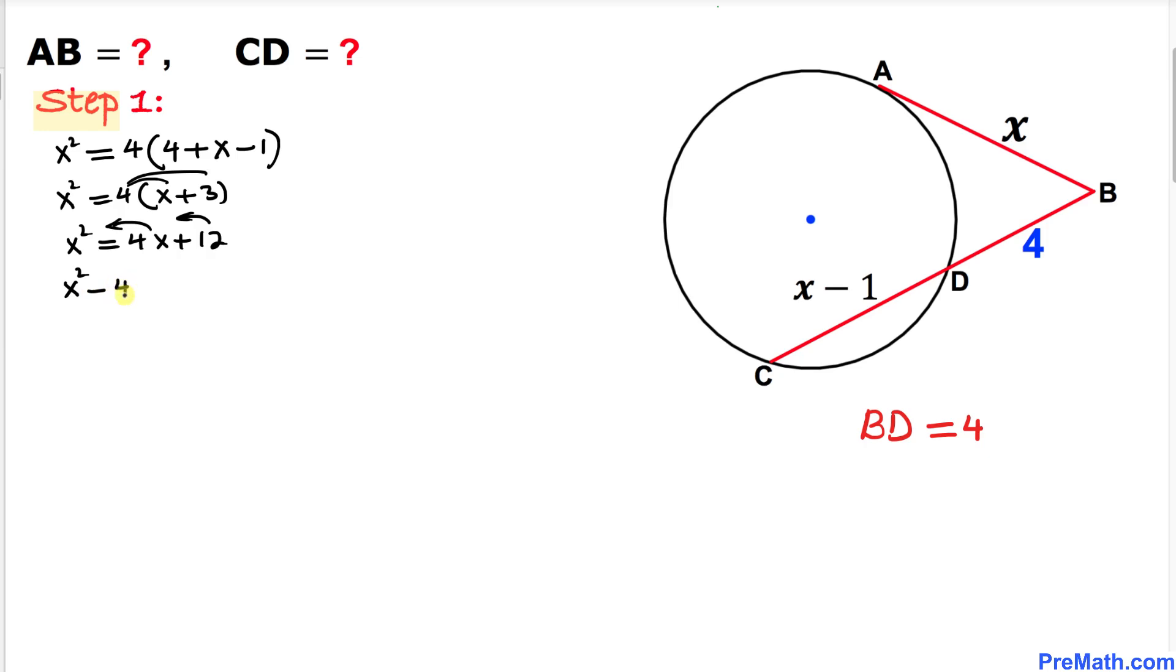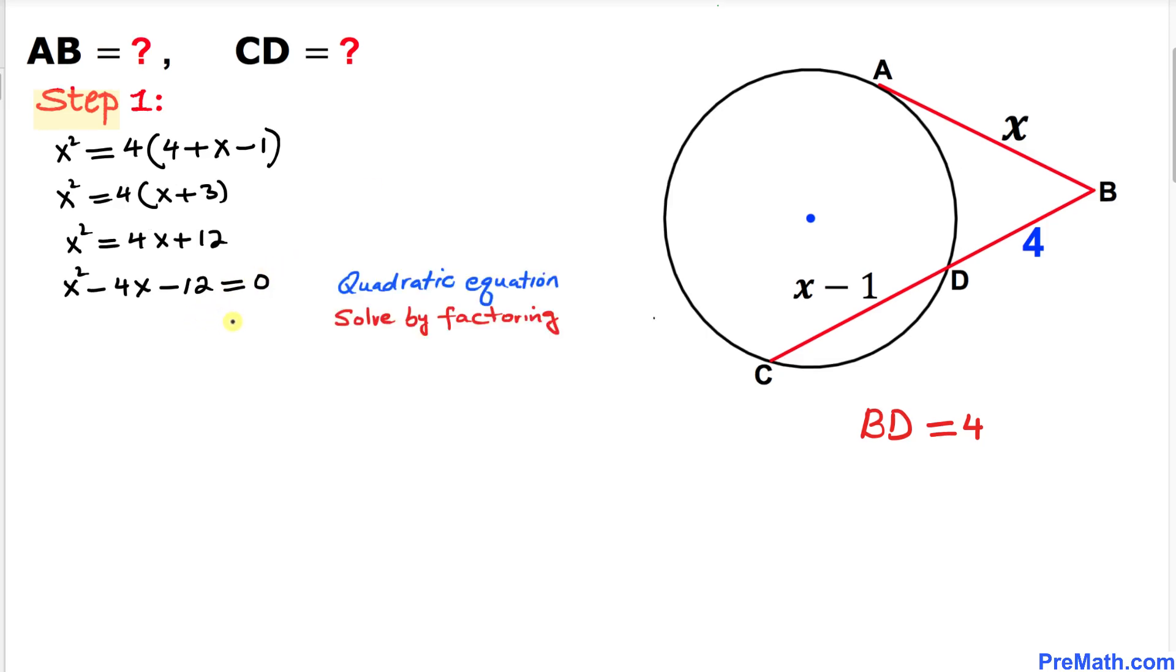Now we can see that this is a quadratic equation, and we are going to solve it by factoring. So the possible factors are going to be x minus 6 and x plus 2 equal to zero. Let's separate them: x minus 6 equal to zero, and x plus 2 equal to zero.